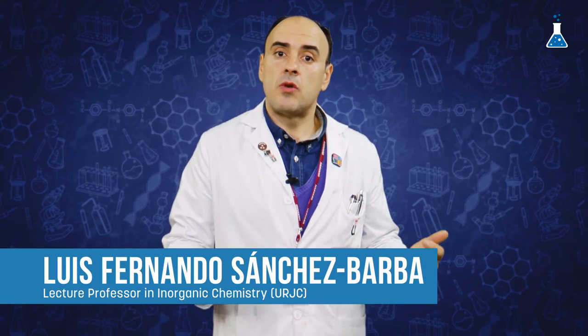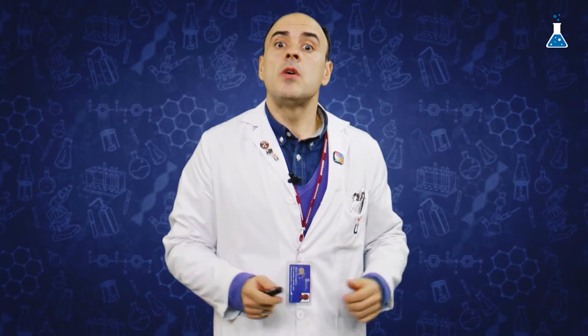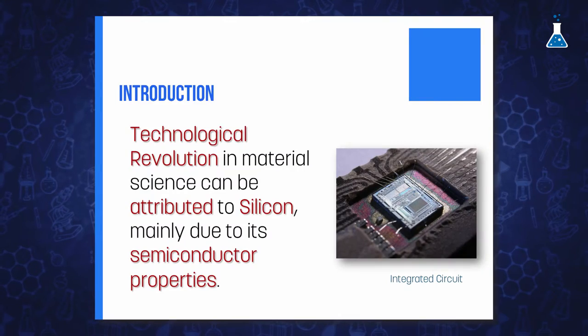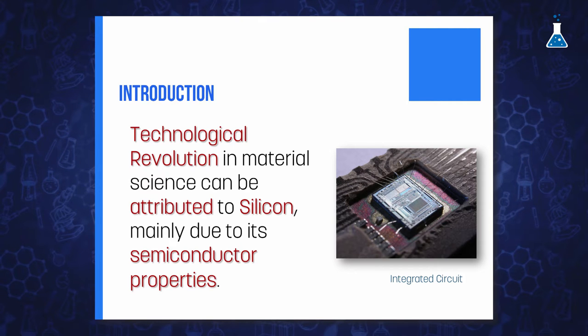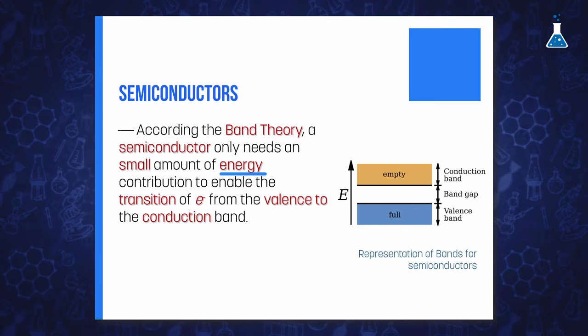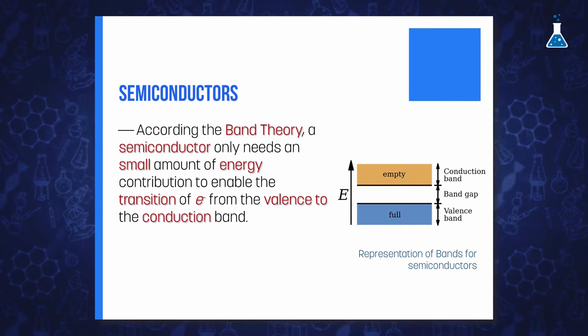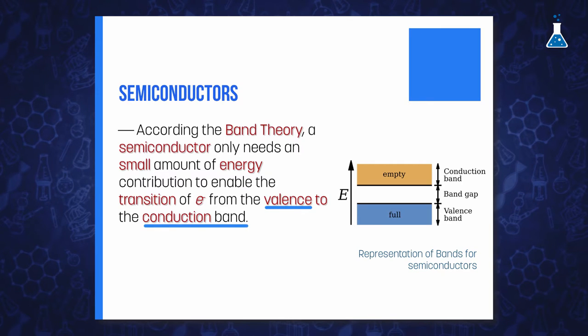The last technological revolution can be attributed to the silicon atom as well as germanium, since this semi-metal or metalloid element provoked a revolution in material science, given its semiconductor character. In general terms, and according to band theory for elements, a semiconductor needs a small external energy contribution to enable the transition of electrons across the gap between valence and conduction bands.